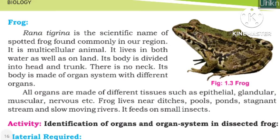The frog is another example of a multicellular organism. Its scientific name is Rana tigrina. Rana is the genus name and tigrina is the species name.